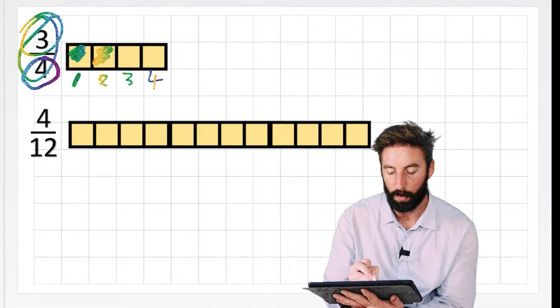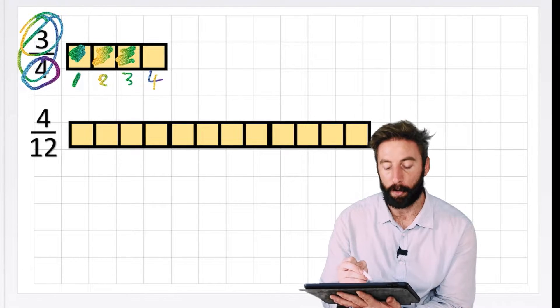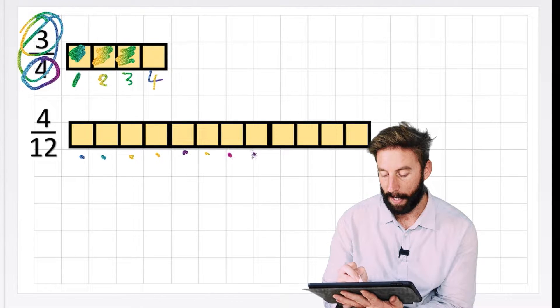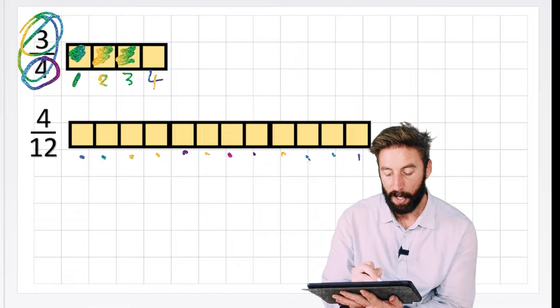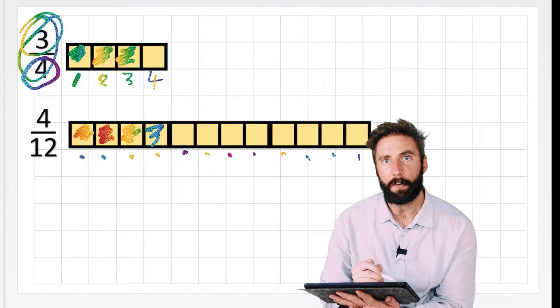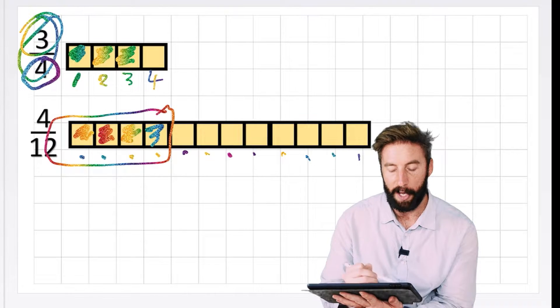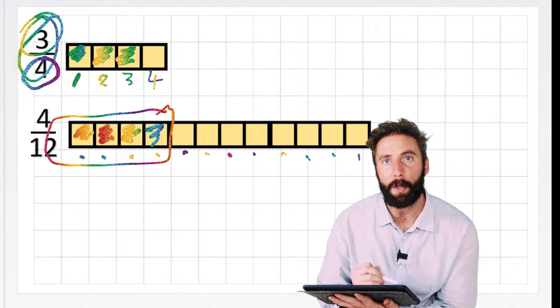And three being our numerator means we get three of these sections. So one, two, three. And then we can look at four twelfths and realize we have to have one, two, three, four, five, six, seven, eight, nine, ten, eleven, twelve sections. And this way we're getting four of them. So on the surface, it might look like four twelfths is greater because it looks like you're getting more. But this would not be the way to do it.